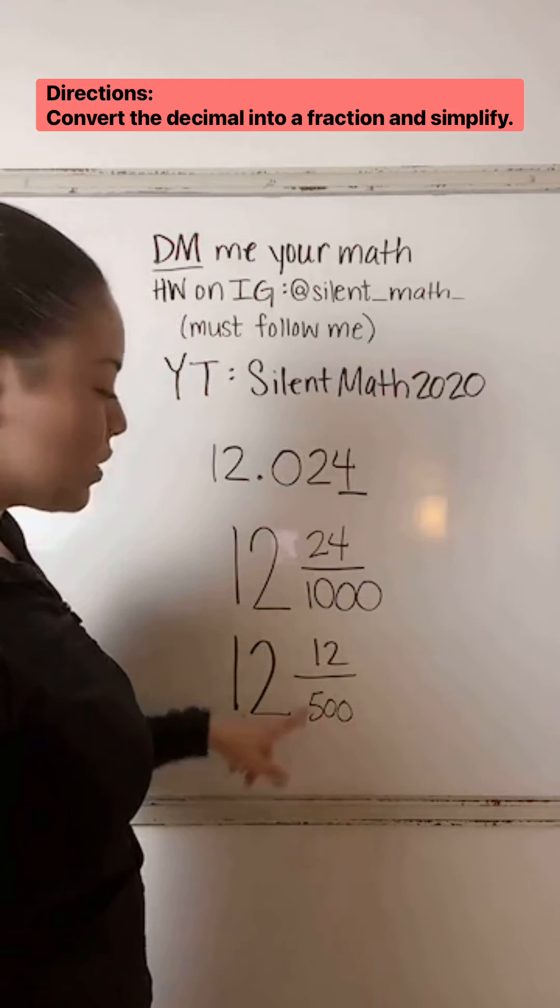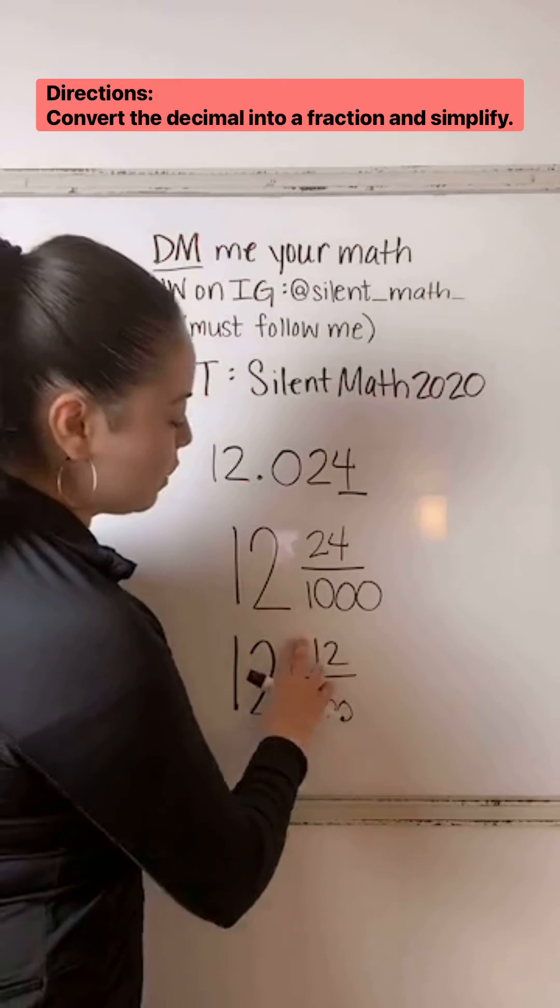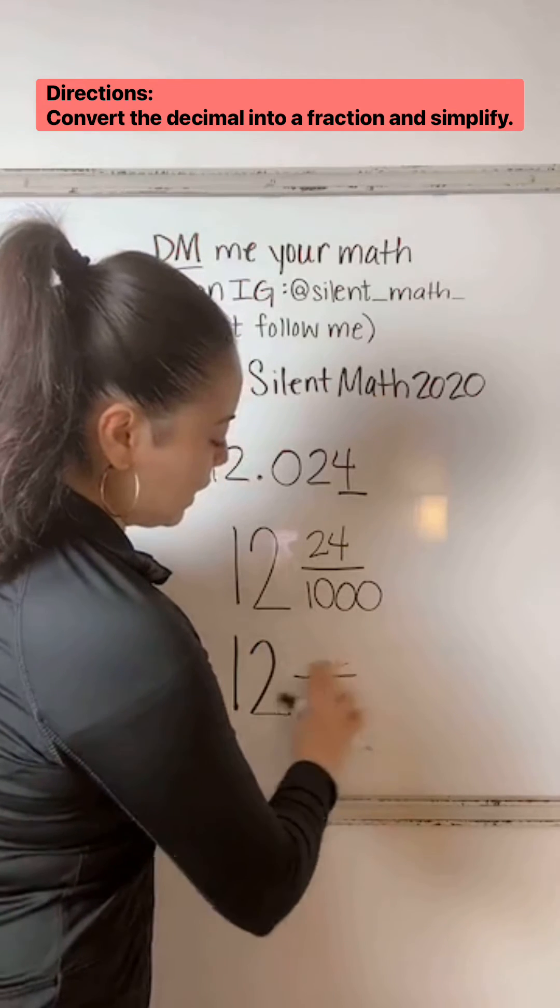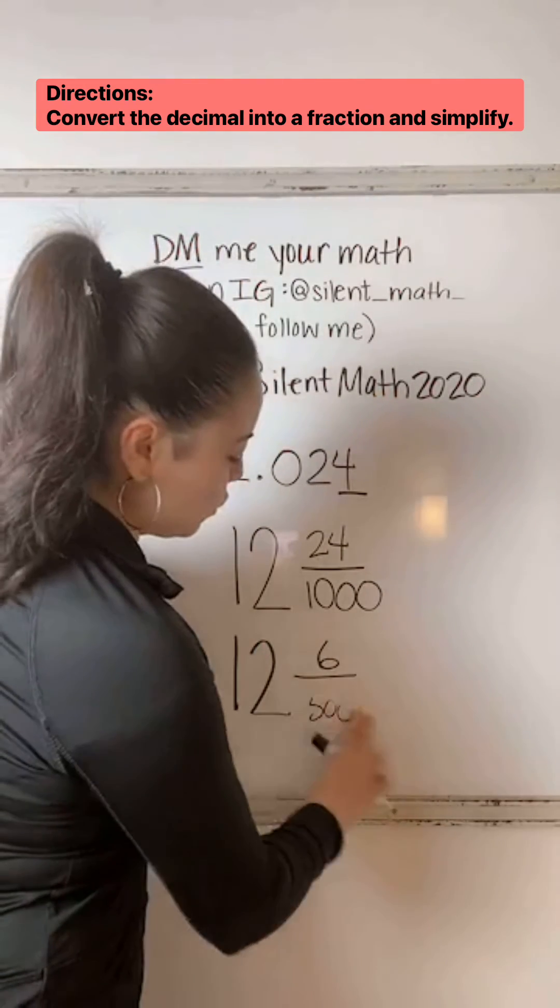Again, they're still even. We can still keep simplifying. So let's keep dividing by two. So 12 divided by two is six. And then 500 divided by two is 250.